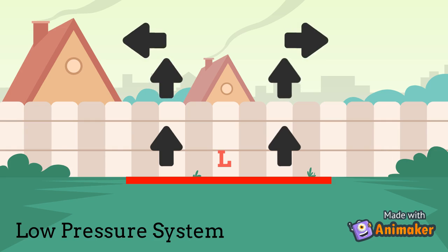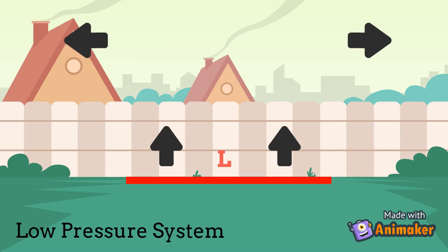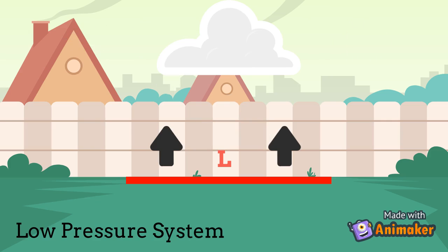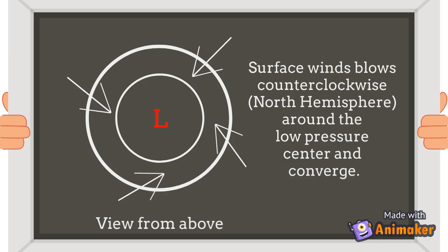Convergence happens at the surface of the low pressure center and the air is forced upwards. The air cools as it rises, forming clouds and precipitation. Around the cyclone, the winds spin anti-clockwise in the Northern Hemisphere and clockwise in the Southern Hemisphere.